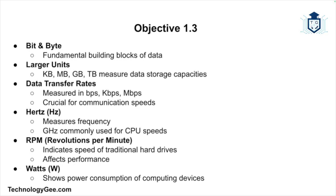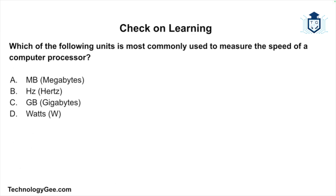In conclusion, understanding units of measure is foundational for anyone studying for the CompTIA Tech Plus certification exam. Here's a quick recap: bit and byte are the building blocks of data; larger units like kilobytes, megabytes, gigabytes, and terabytes help measure data storage; data transfer rates are measured in bits per second, kilobits per second, and megabits per second; hertz is used to measure frequency and processor speeds such as gigahertz for CPUs; RPM measures the speed of traditional hard drives; and watts indicates the power consumption of computing devices. By mastering these units, you'll have a better understanding of how data is stored, transferred, processed, and powered.